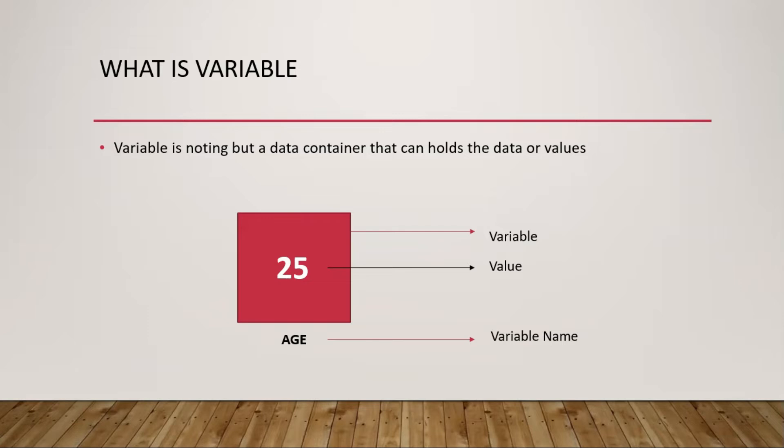This can be called a variable which holds the value 25. If you see below, the name 'Age' is the name of this particular variable. Basically, in any programming language, once we create a variable, we assign it a name to identify and differentiate variables.